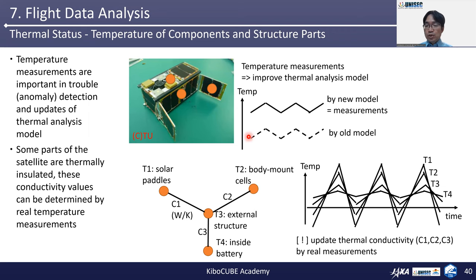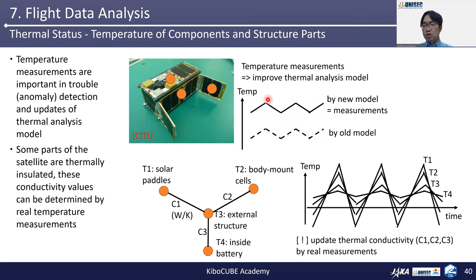Temperature measurements are important for anomaly detection and update of the thermal analysis model. Please don't forget the existence of the all-sunshine phase. In the operation of ISS-deployed satellites, it repeats the sunshine and eclipse phase initially. If you notice a higher temperature than estimated, you need to prepare for the extreme high temperature in the all-sunshine phase — the temperature will be flat at its highest. The only countermeasure is to turn off most of the inside components to prevent temperature rising. Some parts of a satellite are thermally insulated, and these thermal conductivity values can be determined by real temperature measurements.